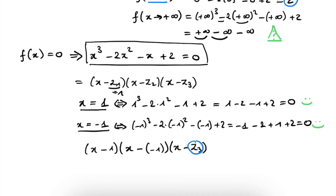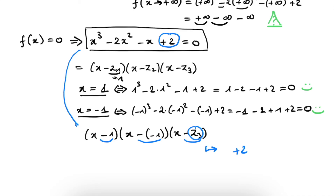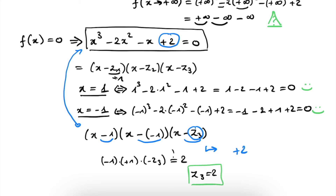How do we find z3? We know that in our original equation we had the constant term plus 2. If we multiply minus 1 times plus 1 times minus z3, this has to equal plus 2 for the forms to be equivalent. So minus 1 times plus 1 times minus z3 equals 2, and we find that z3 is equal to 2. We have found our three solutions: x equal to 1, x equal to minus 1, and x equal to 2.